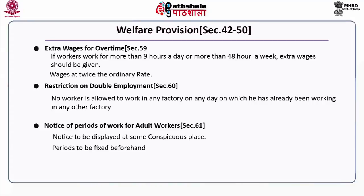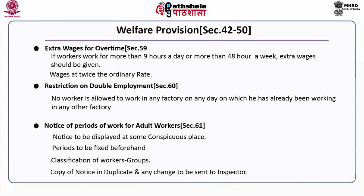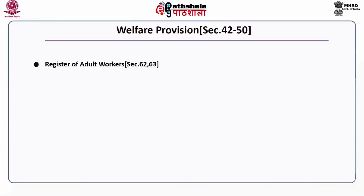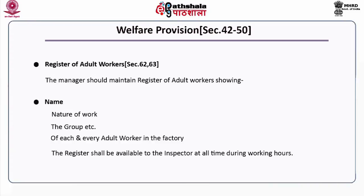Section 61, notice of period of work for adult workers: a notice is to be displayed at conspicuous places, with periods fixed beforehand and classification of workers into groups. A copy of the notice and any change must be sent to the inspector. Register of adult workers under Sections 62 and 63: the manager should maintain a register of adult workers showing name, nature of work, the group and the relay to which they are attached. The register shall be available to the inspector at all times during working hours.